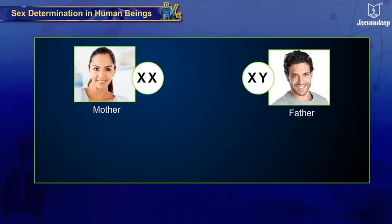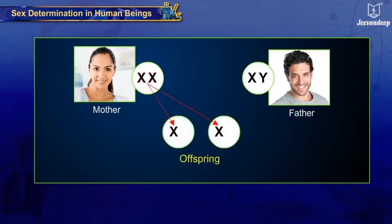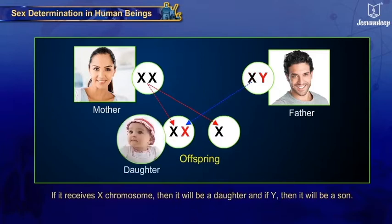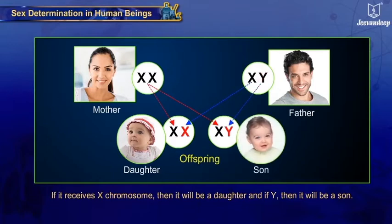All offspring inherit an X chromosome from their mother. Hence, the chromosome that the offspring receives from the father determines its sex. If it receives an X chromosome, then it will be a daughter, and if Y, then it will be a son.